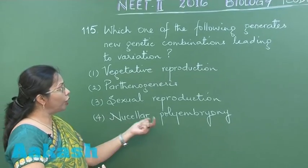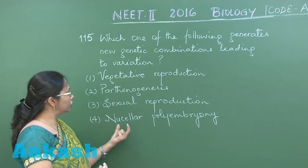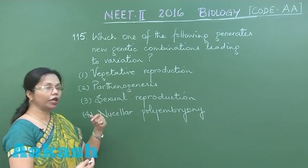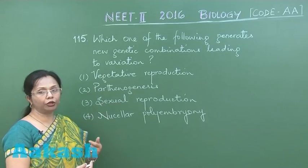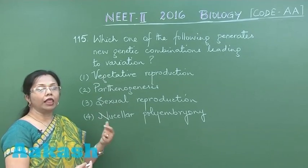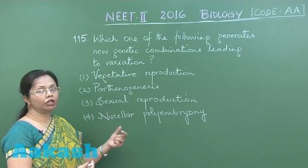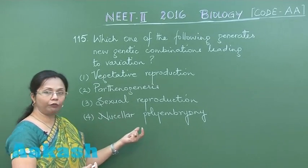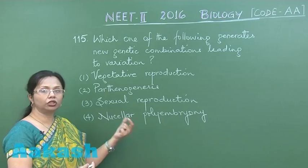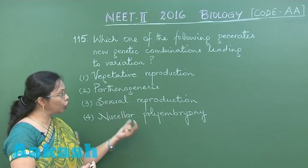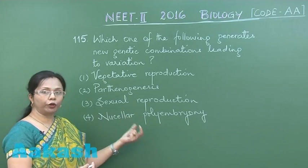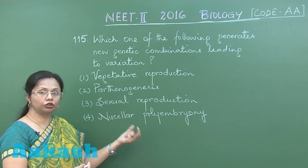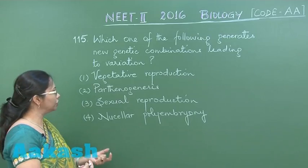Nucellar polyembryony involves the nucellus, which is around the mega gametophyte, dividing to give rise to many embryos. This type of clonal propagation is seen in members of the citrus family.